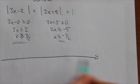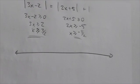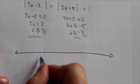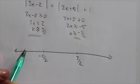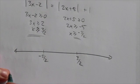Now what this does is it creates some intervals along the number line. Over here we've got negative 5 over 2 and over here we've got 3 over 2. This creates three different intervals along the number line here.